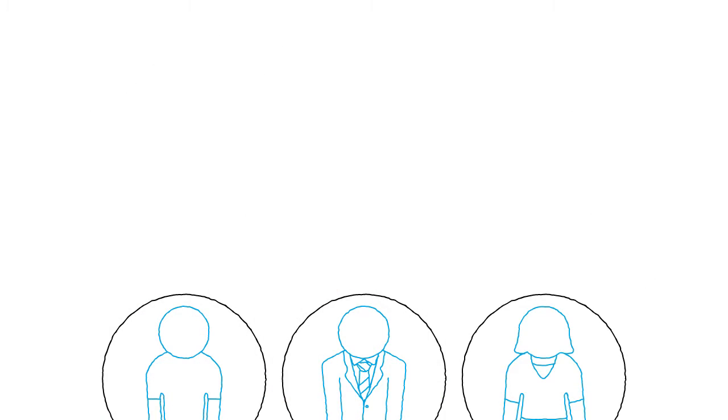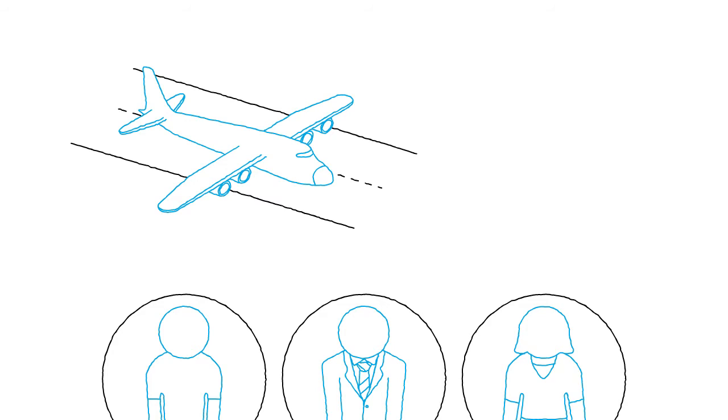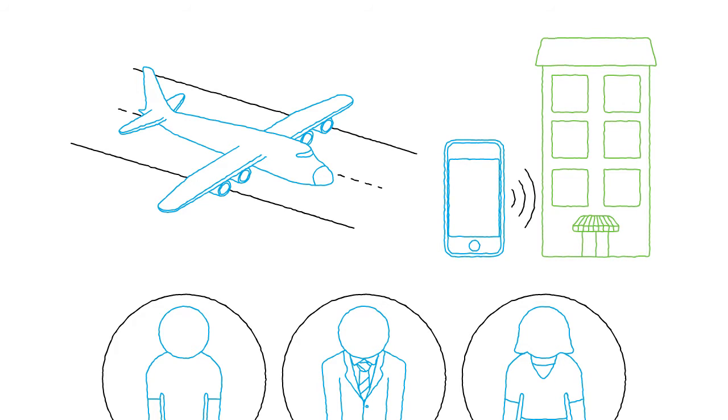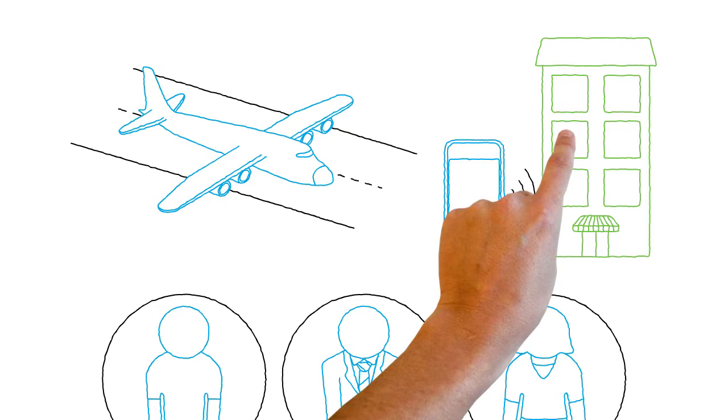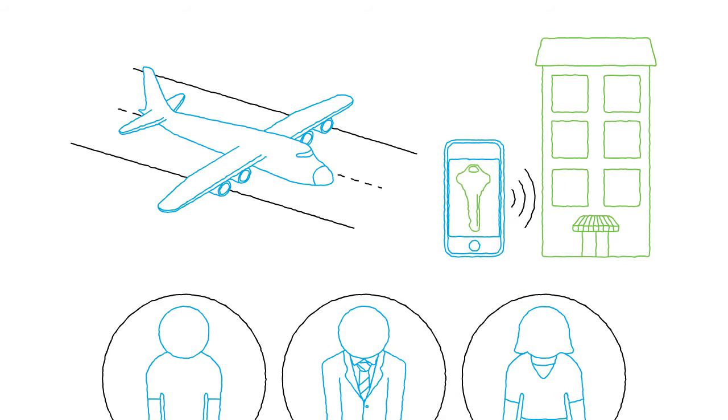Monique's smartphone knows when her plane lands and automatically contacts her hotel and checks her in. Monique can then go straight to her room and use her smartphone as the key to enter the room.